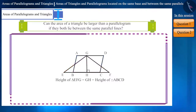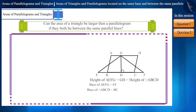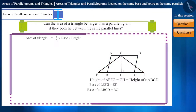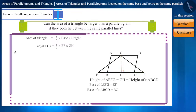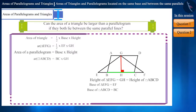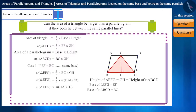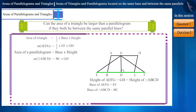This is the height of both the triangle and the parallelogram. Since these shapes lie between the parallel lines AD and EF, the height of both will be equal, which is GH. Therefore, their area will depend on their base. The area of triangle EFG is half multiplied by EF multiplied by GH, and the area of parallelogram ABCD is BC multiplied by GH. If the base of the triangle EF equals 2BC, then what will happen?